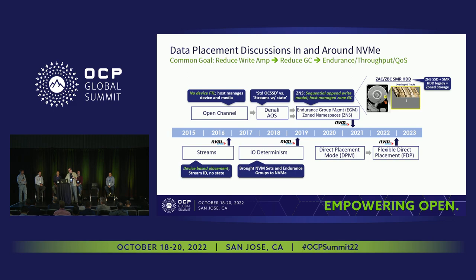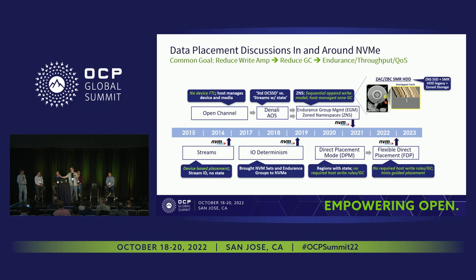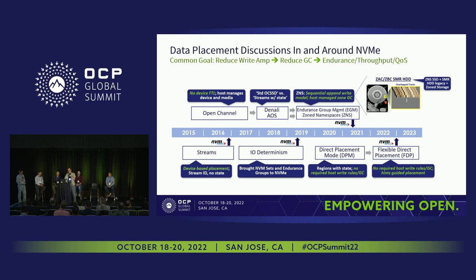The next thing that happened was the direct placement discussions and the smart FTL work. Google had been working on smart FTL for years and decided to standardize it pretty recently. Then Google and Meta joined together. Why tell this story? Because we've left a lot of standards on the cutting room floor. There was a lot of good work as we meandered toward a common goal: to reduce write-amp, reduce garbage collection, and end up with more endurance, better throughput, and more predictable latency. Now we have two solutions: ZNS is getting established and FDP is well on its way to being standardized.